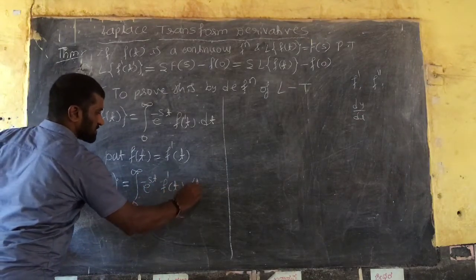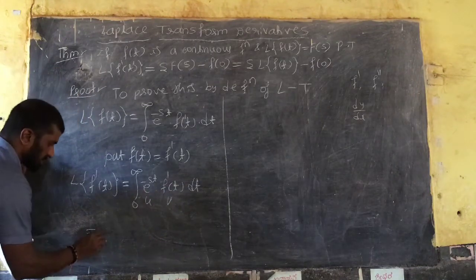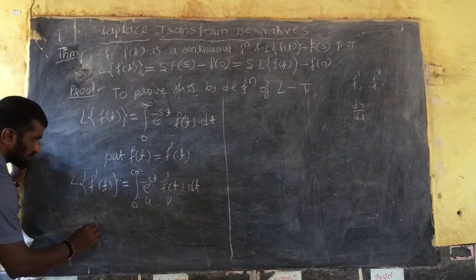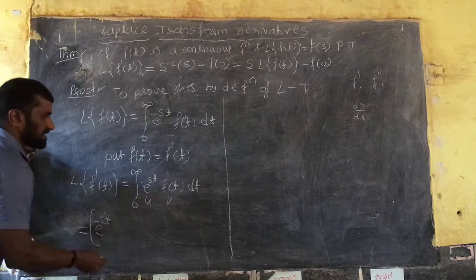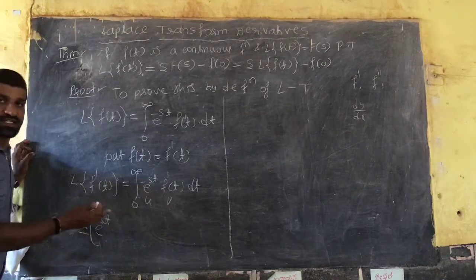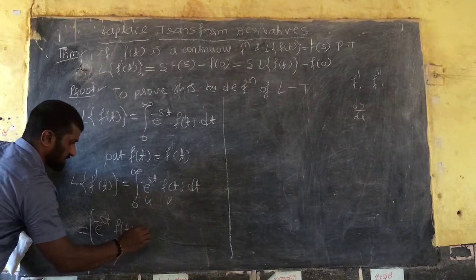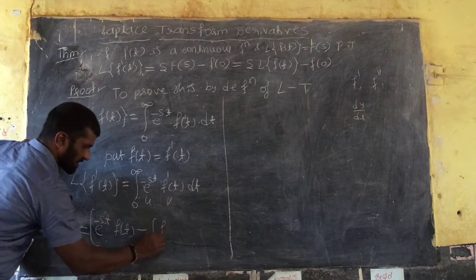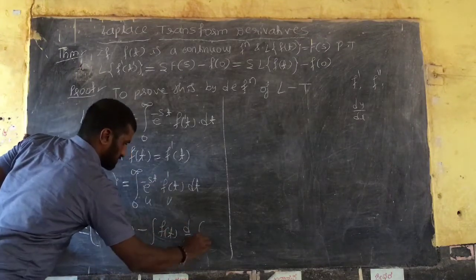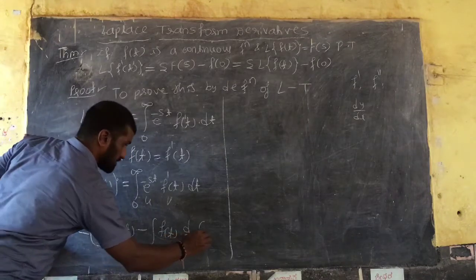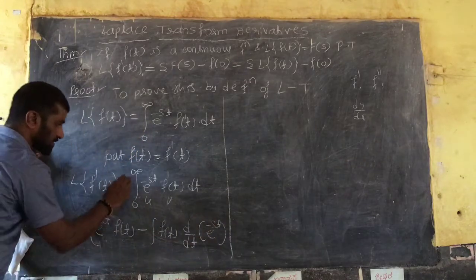That equals the integration from 0 to infinity of e^{-st} · f'(t) dt. Now apply the u·v (integration by parts) form. First function as it is: e^{-st}, times the integration of f'(t) — and the integration of f'(t) is f(t) — minus the integration of f(t) times the differentiation of e^{-st} dt, from 0 to infinity.